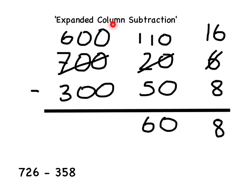Finally in the hundreds column I'm being asked to do 600 subtract 300. This is much easier than the previous two columns and it gives me 300.